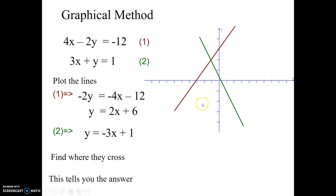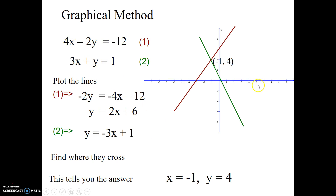I work out where the two lines cross, which happens to be (−1, 4) on this graph. So my answer is x equals negative 1, y equals 4. You can also plot by finding intercepts: set x equals 0 to find the y-intercept, and set y equals 0 to find the x-intercept. That's how you solve it graphically — draw the two lines and see where they cross.